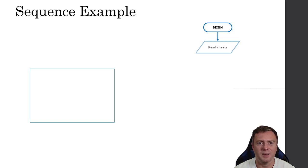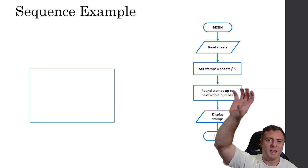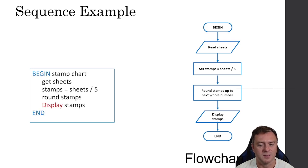So a sequencing example here, if we begin, we're going to read the sheets. So that's parallelogram because that's an input coming into the system. From that, we're then going to set the stamps is equal to the sheets divided by five. From that, we're then going to round the number up to the nearest whole number. And then from that, we're going to display the stamps, because again, that is an output. That's why we use the parallelogram. Then we end it. So notice there's a clear beginning, and then there's a clear end at the end there. That's the flowchart version.